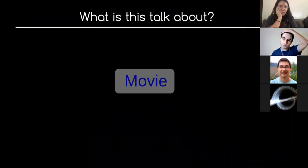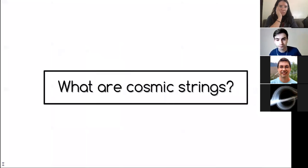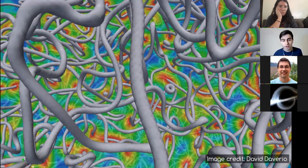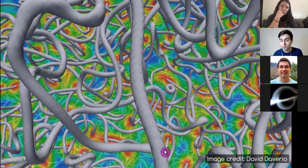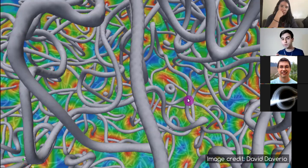Before talking about all of that, we should talk about what cosmic strings are. Cosmic strings are topological defects that are expected to have formed in the very early universe. They are stable matter configurations that are one-dimensional. They form during a phase transition in the early universe and they come as a network — the network evolves, intersects, and forms closed loops.